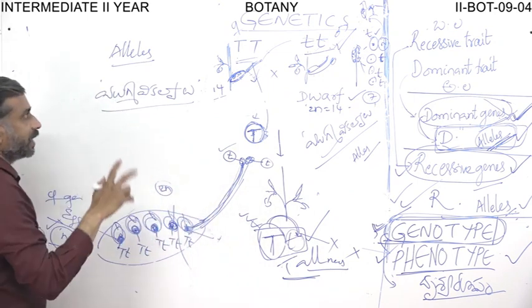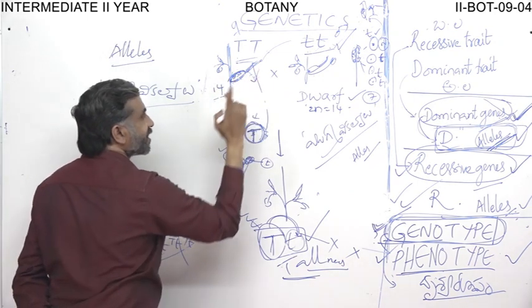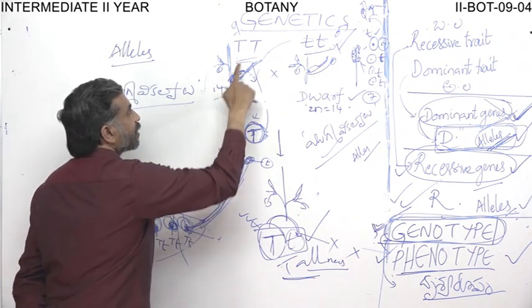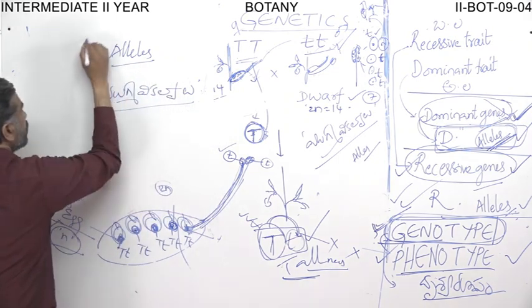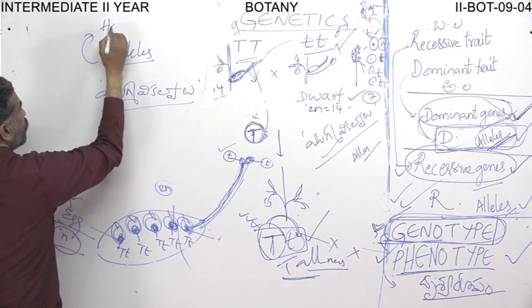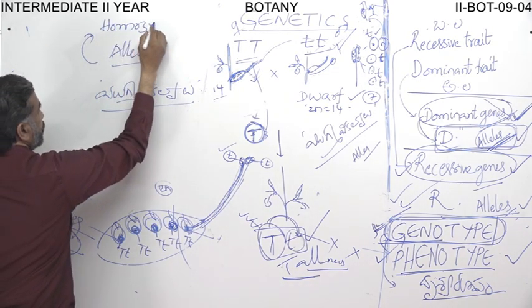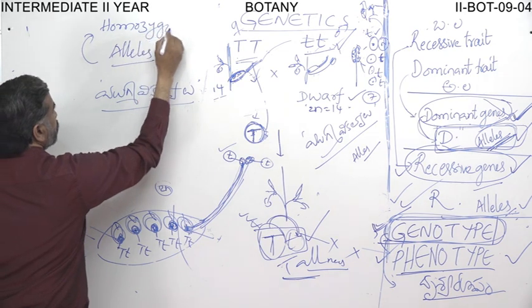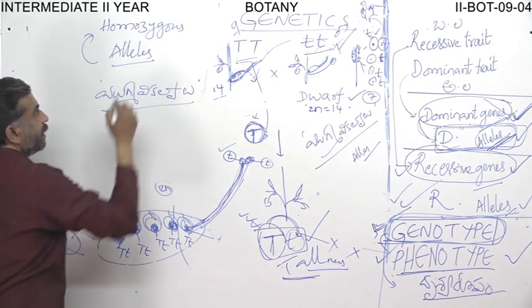When the two alleles coding for a single character are similar — for example, capital T capital T for tallness or small t small t for dwarfness — those two alleles are known as homozygous alleles, and the plant is in a homozygous condition.